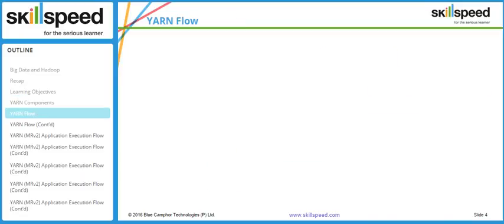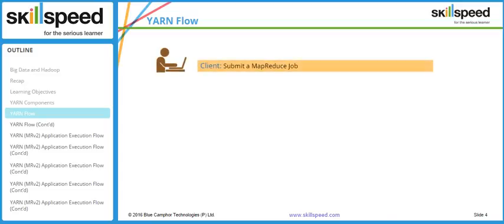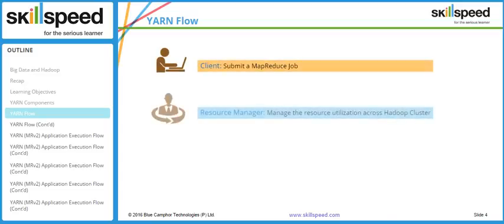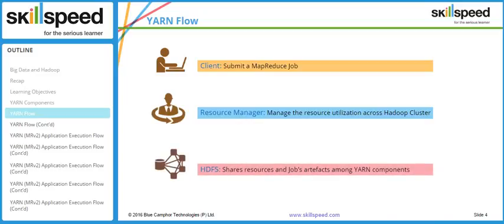To understand the YARN flow we should start from the beginning. Initially the client will submit a MapReduce job, and the Resource Manager is there to accept that job. It manages resource utilization across the Hadoop cluster. HDFS stores the job resources and artifacts among YARN components — essentially HDFS stores the data which has to be processed.